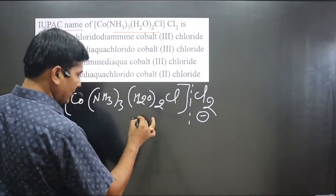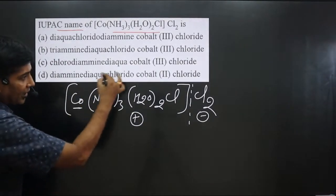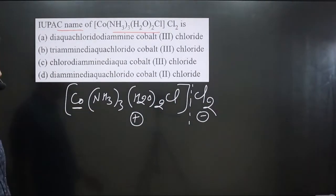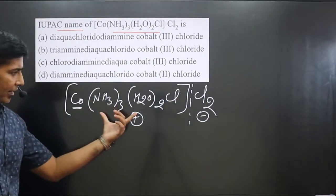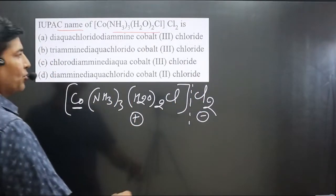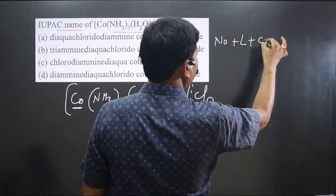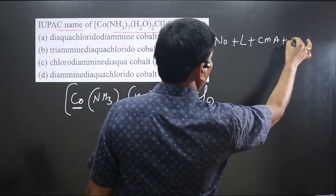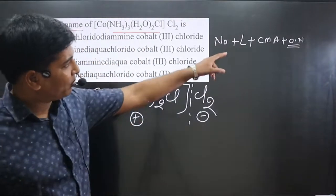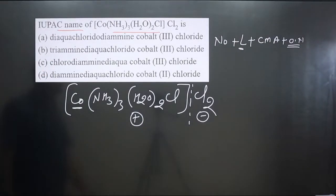Breaking the complex, the first part is the positive (cationic) part and the Cl₂ is the counter (negative) part. Since the central element is in the cationic complex, we use its common name as given in the periodic table. The naming order is: number of ligand, type of ligand, central metal atom, then oxidation number in Roman numerals. If more than one type of ligand is present, we follow alphabetical order.